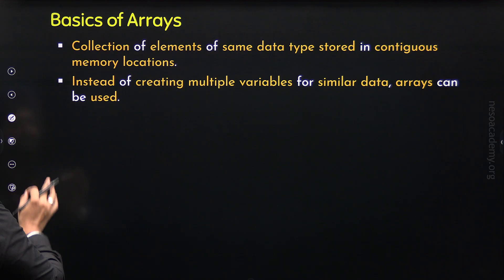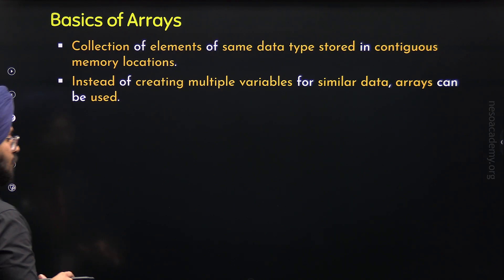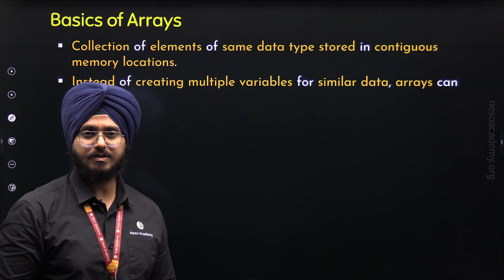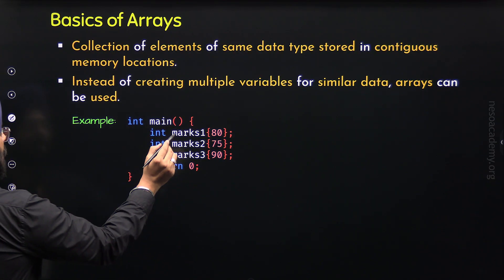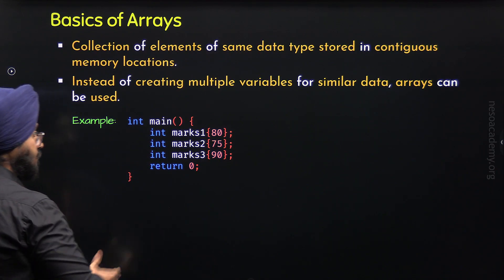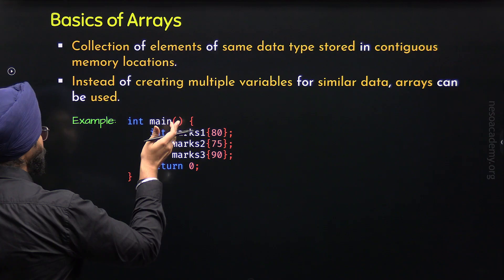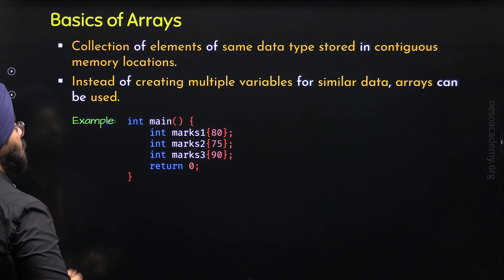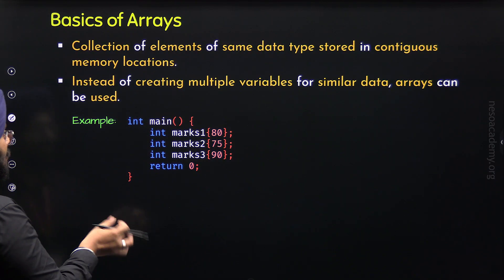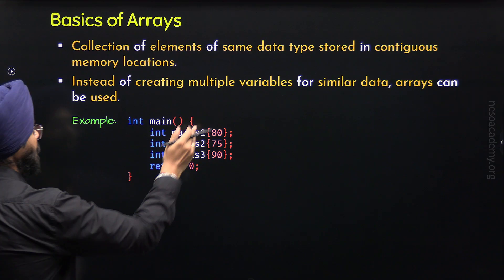Now let's understand through an example how we can create an array in C++. Let us assume that we want to store marks of three different subjects. We may choose to store those marks in three different variables — marks1, marks2 and marks3. These are three different variables representing marks of three different subjects, with values 80, 75 and 90. These are all integer values. Instead of creating these variables, we can easily create an array, because these are similar kind of data — we want to store marks, and each mark is of type integer. Therefore, we can create an array called marks and store all these marks in it.